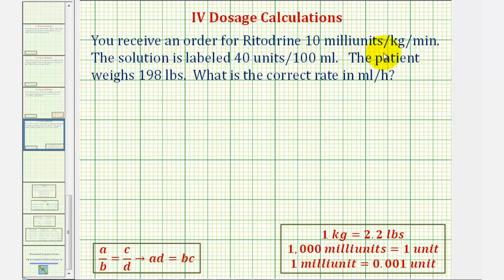You receive an order for 10 milliunits per kilogram per minute. The solution is labeled 40 units per 100 milliliters. The patient weighs 198 pounds. What is the correct rate, or flow rate, in milliliters per hour?